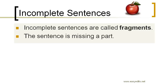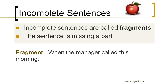Incomplete sentences are called fragments. Why are they called fragments? Because they're missing something — they could be missing a subject, a verb, or an object. Let's look at this example: 'When the manager called this morning.' That can't be it, can it? Your natural question is, 'What happened?' If someone said that to you in a conversation and then started talking about something else, you would say, 'Wait a minute, what happened?' That's an incomplete thought — that is a fragment. Something has to come after this phrase.